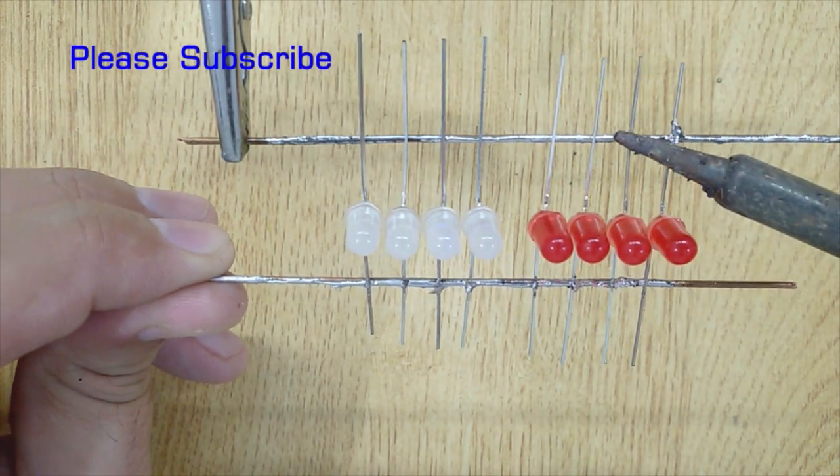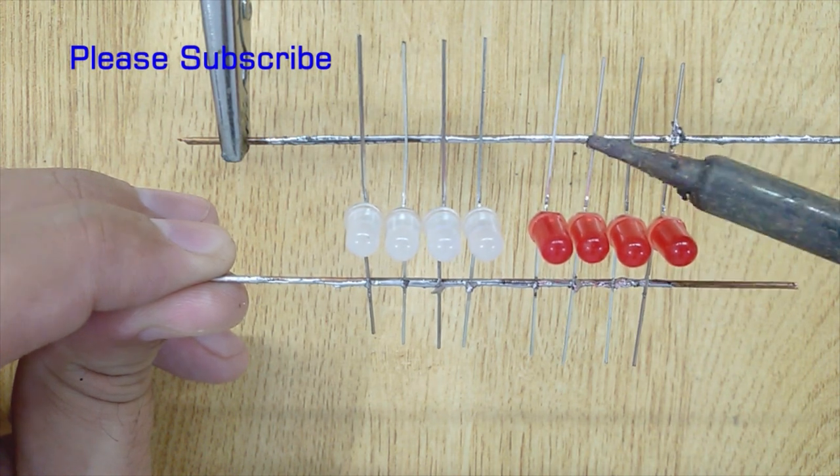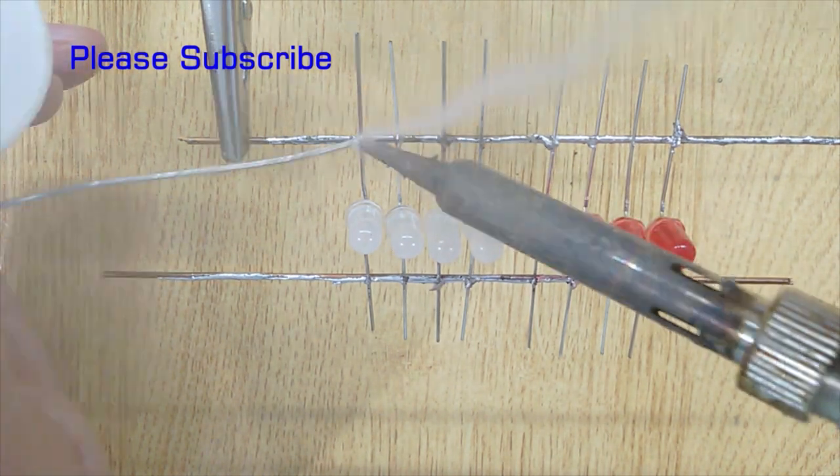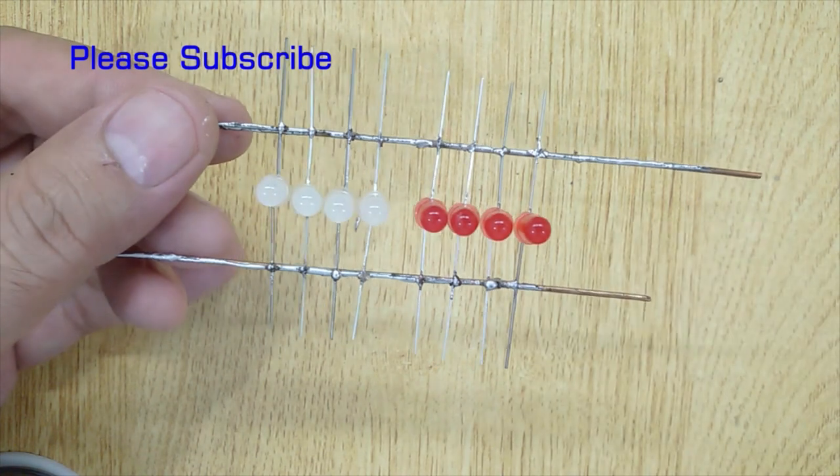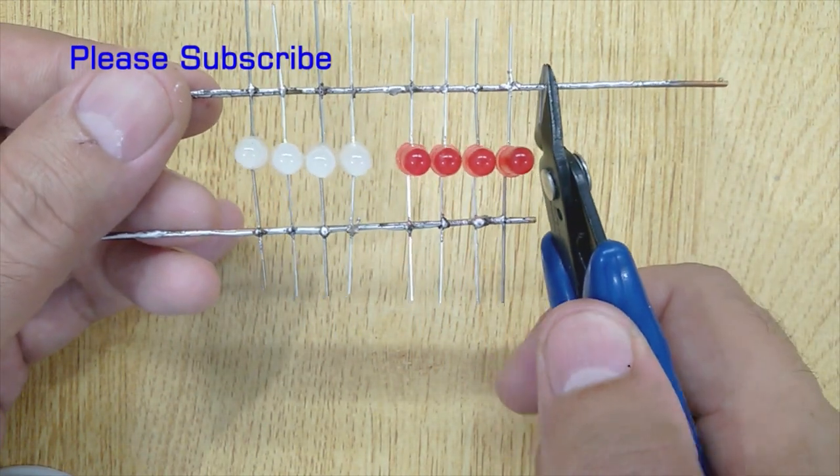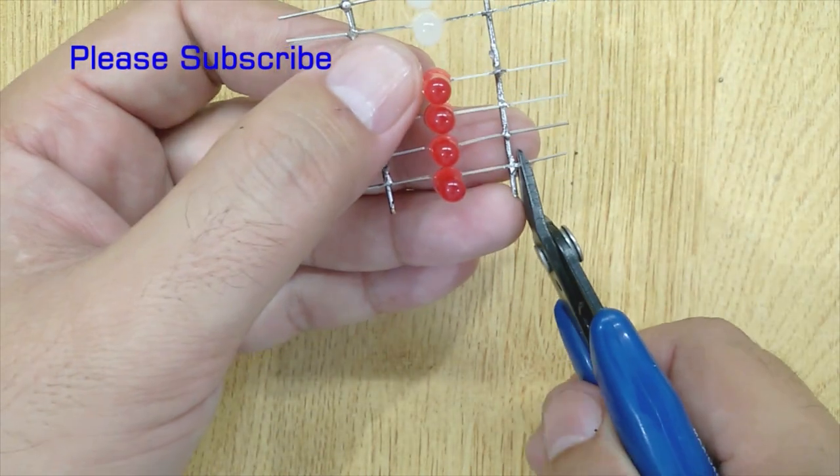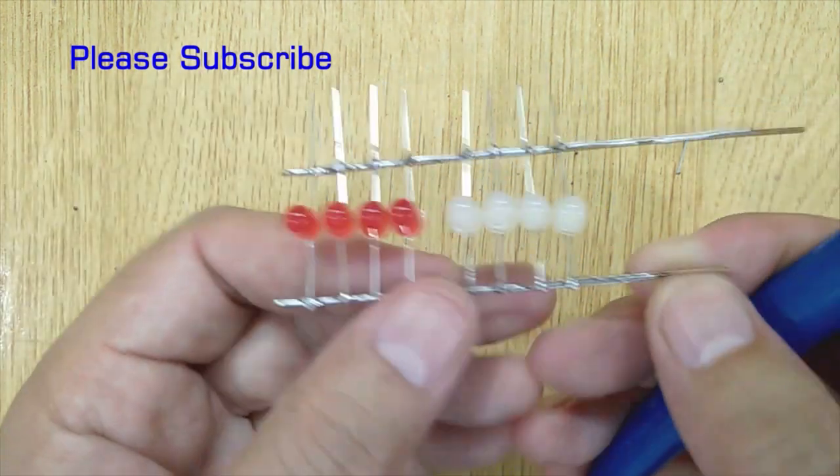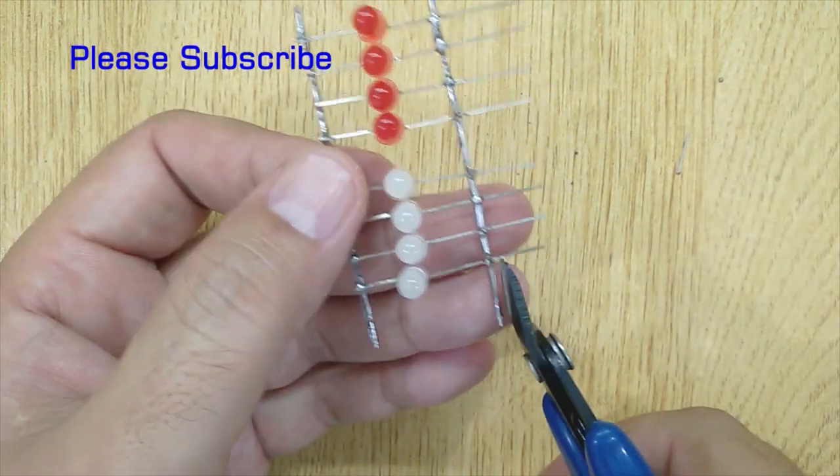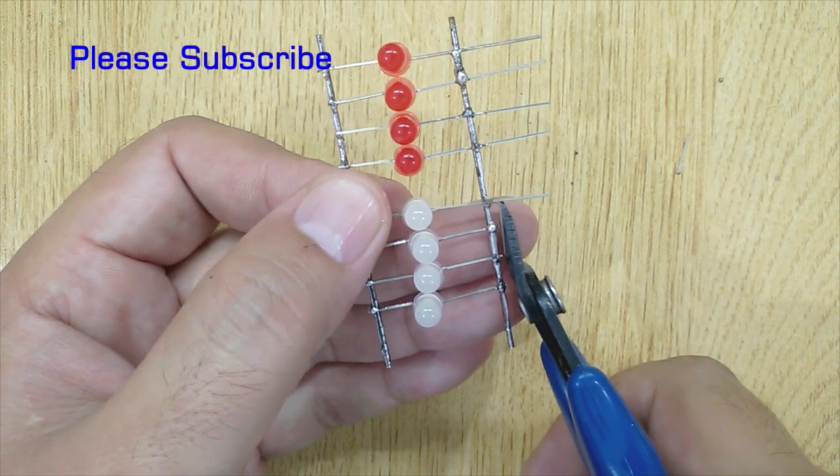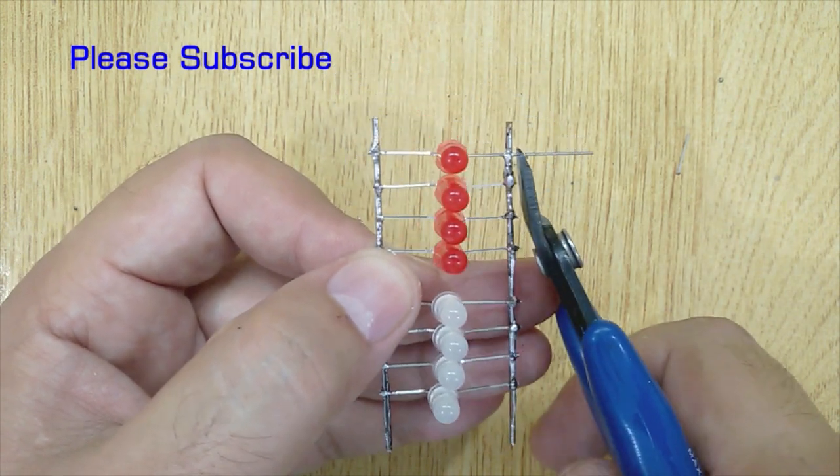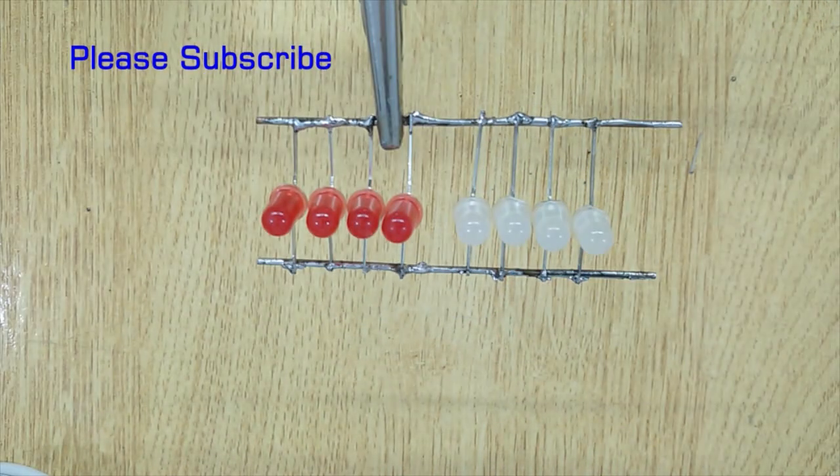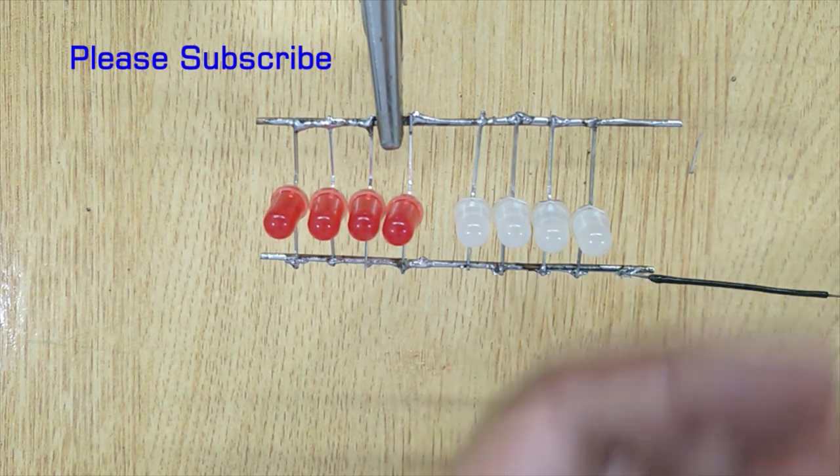Now solder the second copper wire with the remaining pins of all these LEDs. Now cut all the extra pins of LEDs and copper wires using a wire cutter. Solder 2 electric wires with the copper wires.